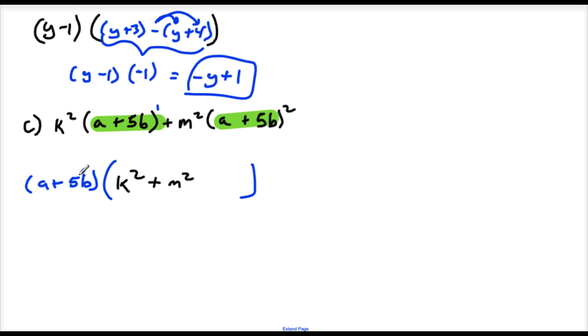So if I pulled one of them out, that means I have one left. So that's why I have to put A plus 5B right here. And that would be it.